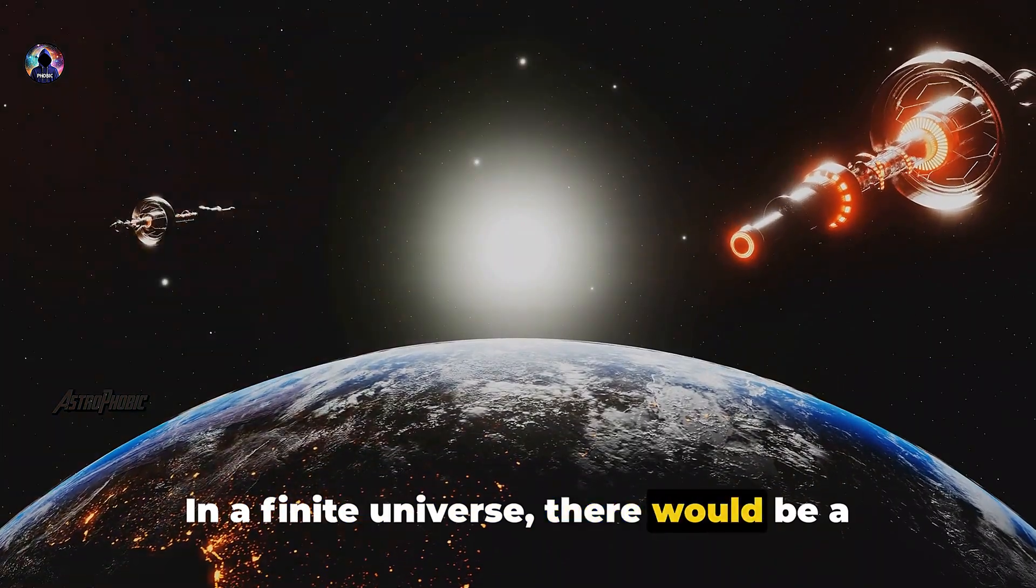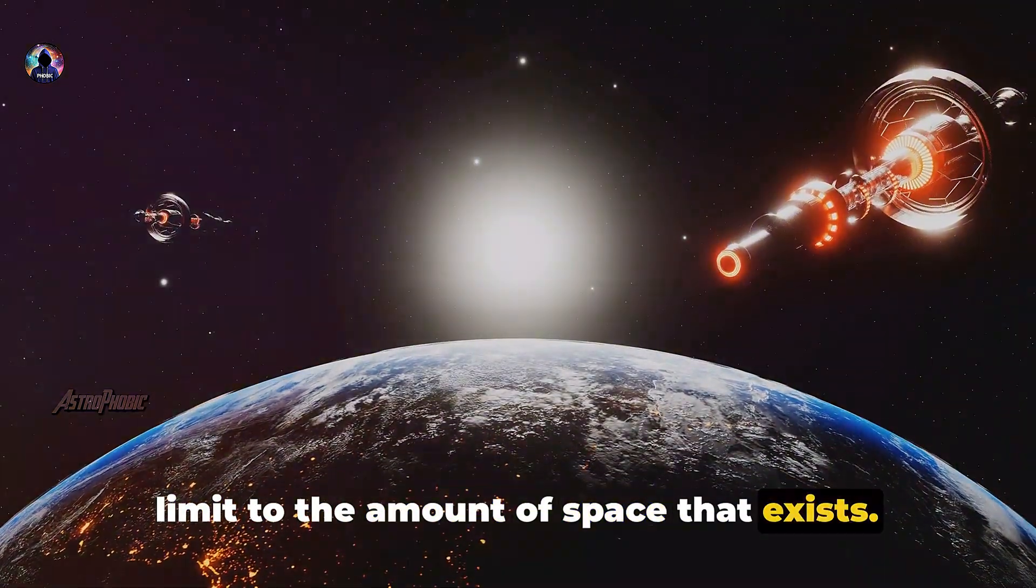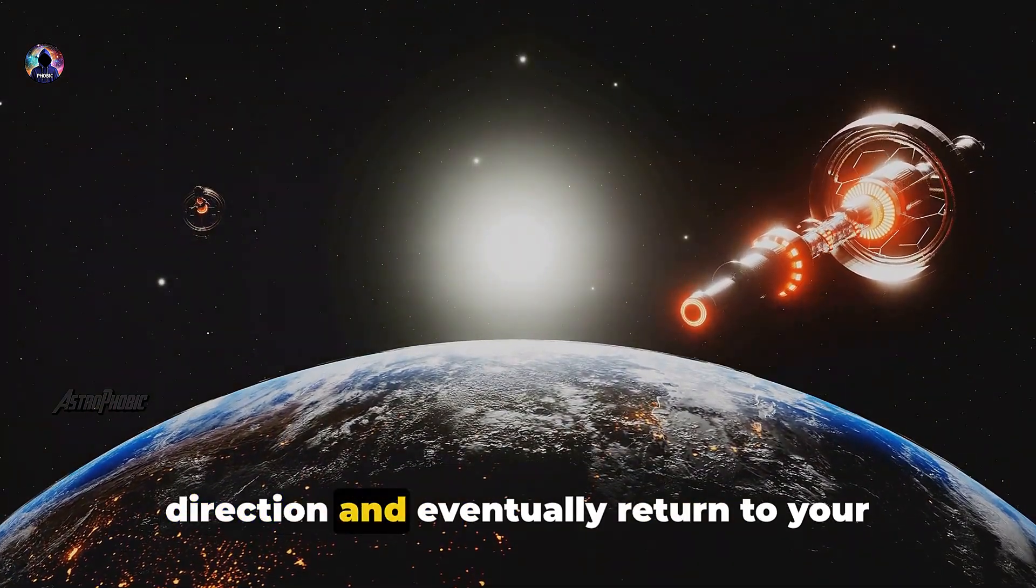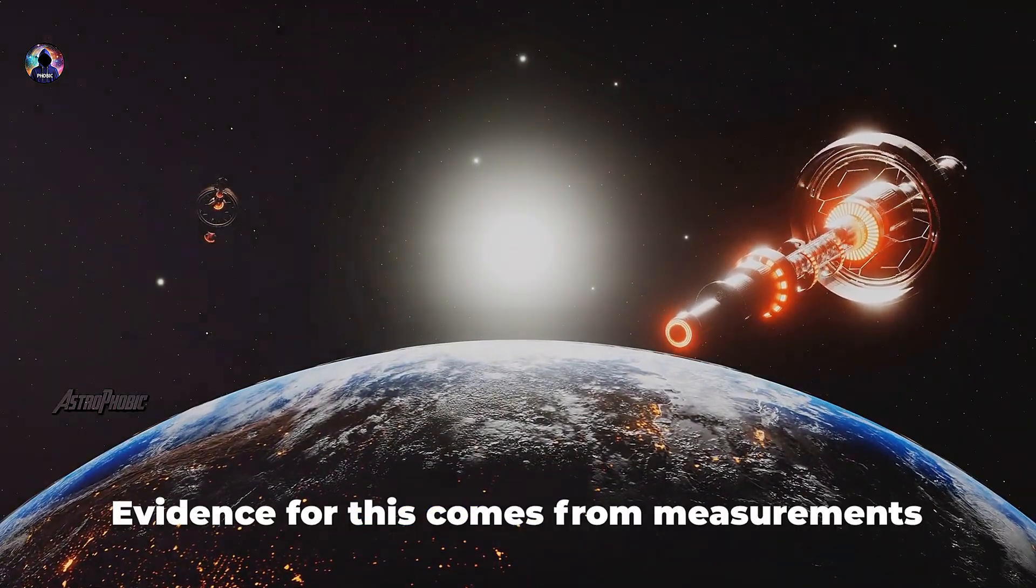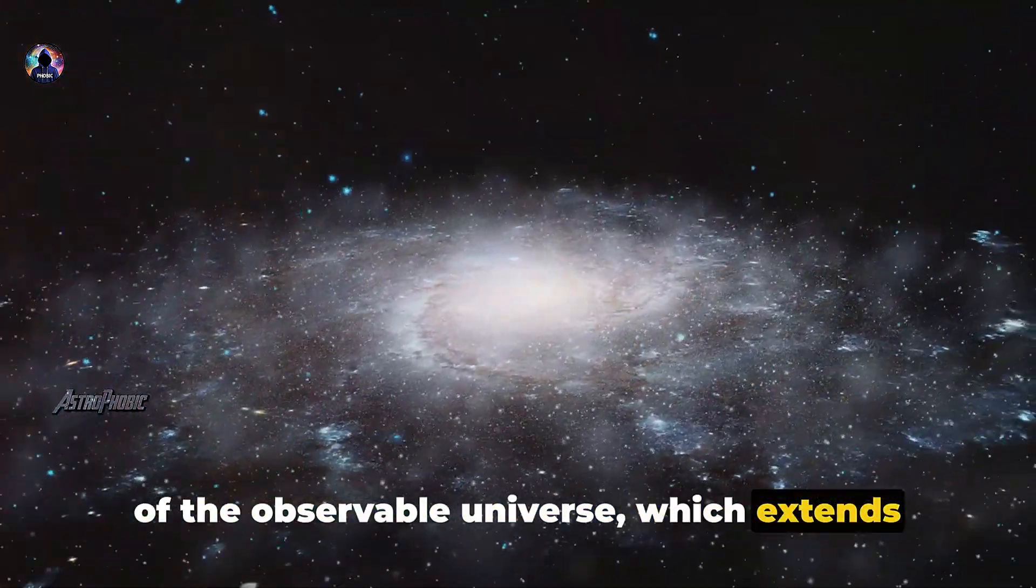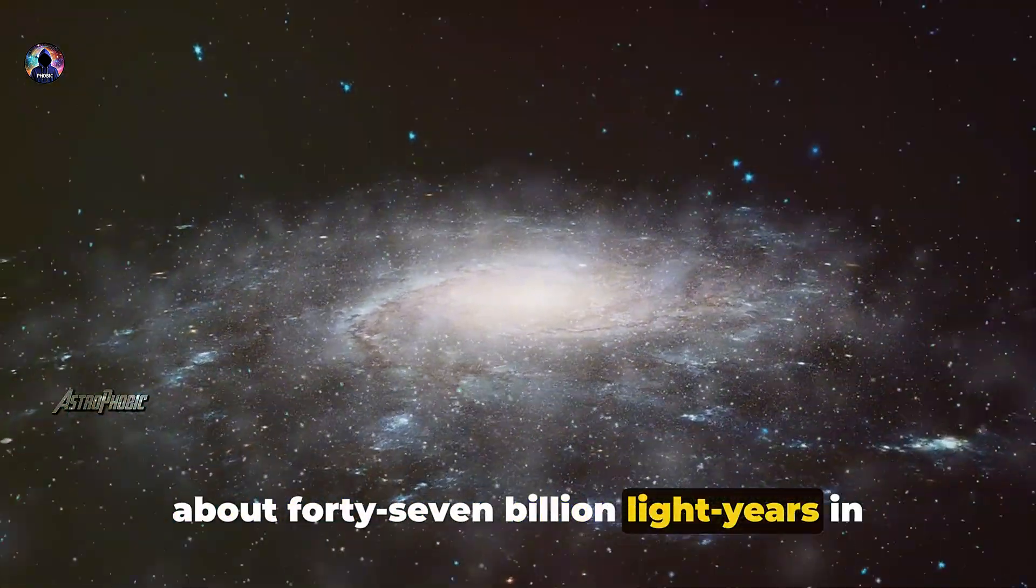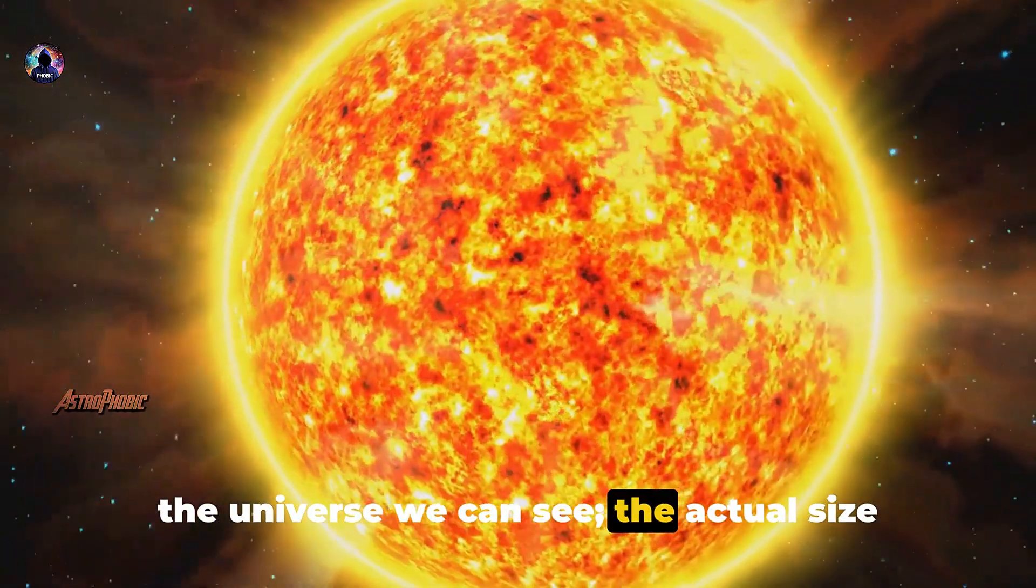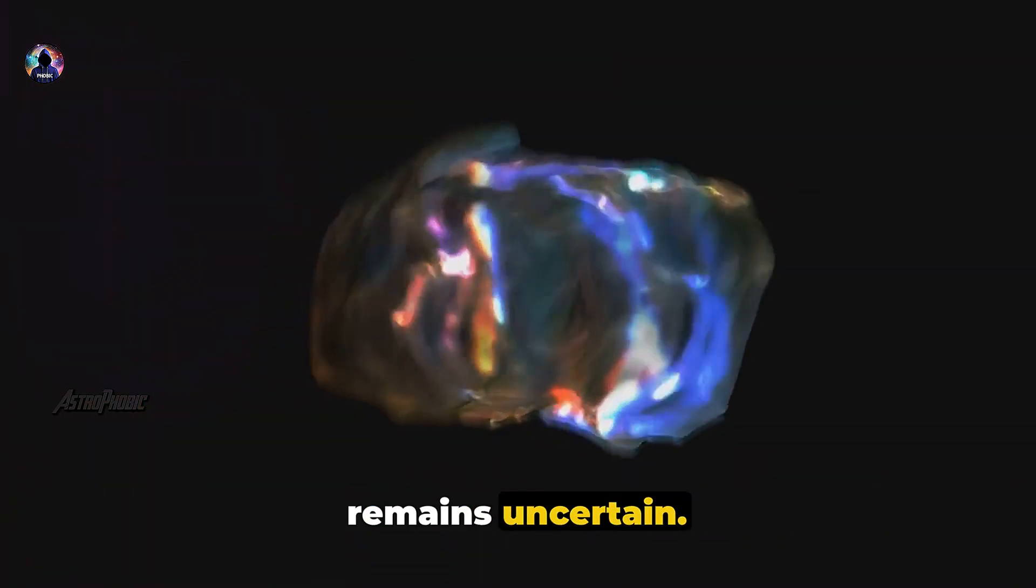In a finite universe, there would be a limit to the amount of space that exists. This is analogous to the surface of a sphere, where you can travel in any direction and eventually return to your starting point. Evidence for this comes from measurements of the observable universe, which extends about 47 billion light-years in every direction. But remember, this is just the part of the universe we can see. The actual size remains uncertain.